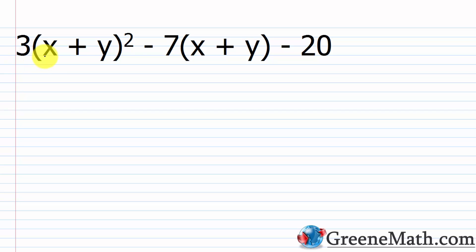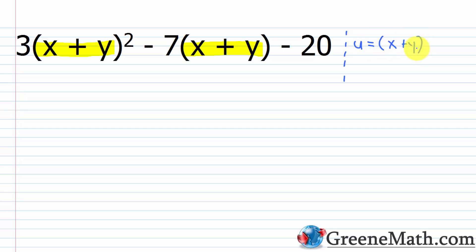Next, we have 3 times the quantity (x + y) squared minus 7 times the quantity (x + y) minus 20. One way to factor this is to let a variable represent the quantity (x + y). Let's say u equals (x + y). Then we have 3u squared minus 7u minus 20, which is much easier to factor.